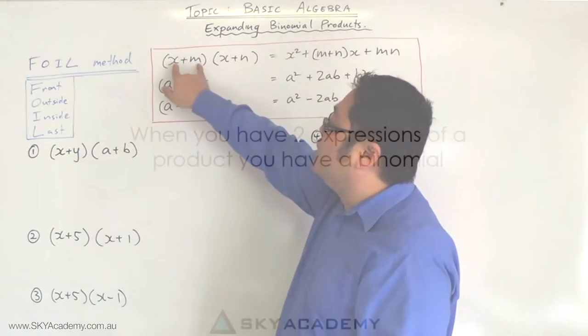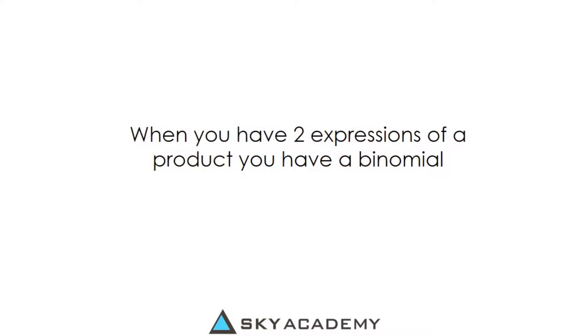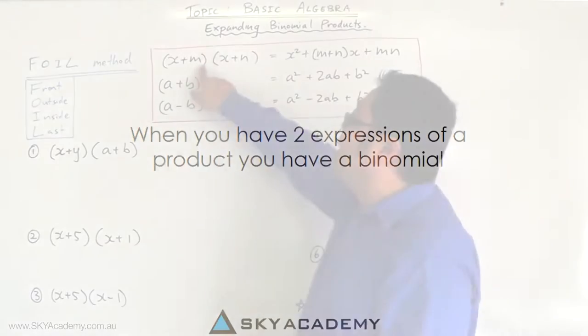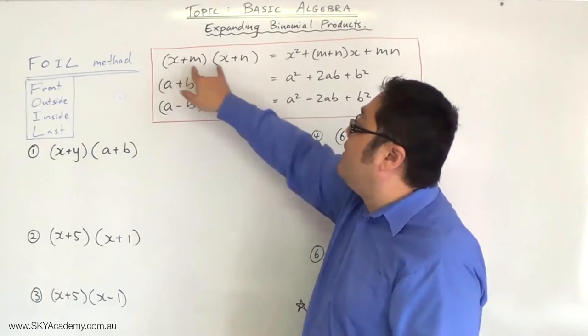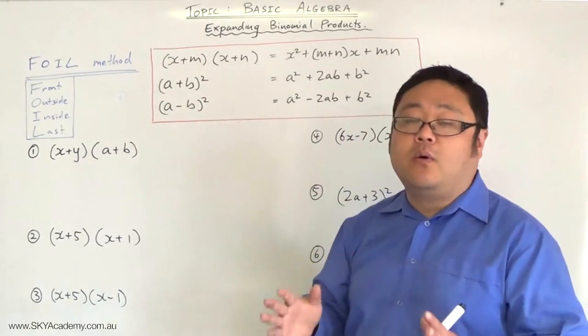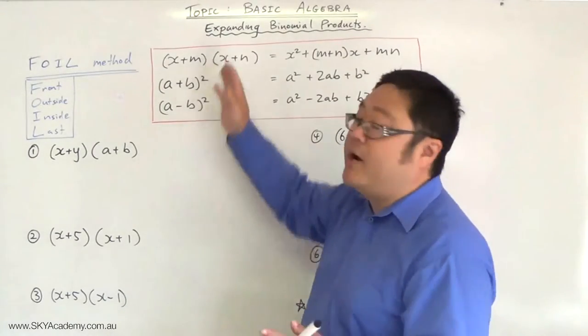Now a binomial is where you've got two pronumeral expressions added together. When you've got two of them multiplied together, they're called a binomial product or a binomial expansion.